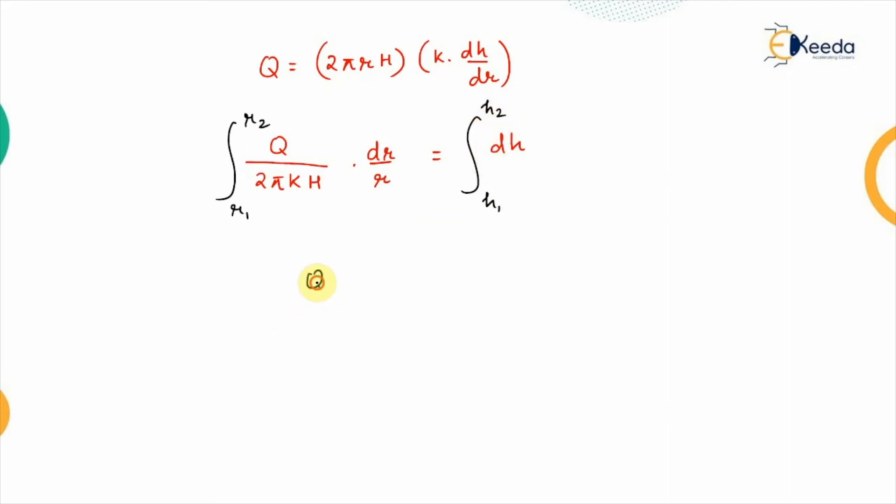So, it is varying from r1 to r2 and the piezometric head that is varying from h1 to h2. So, it will be q upon 2πkh this is ln r limits from r1 to r2 and this will be h limits from h1 to h2.